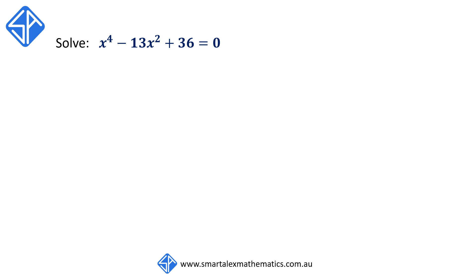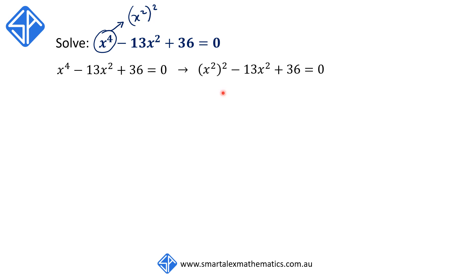This is an equation of degree 4. In order to reduce it to a quadratic equation, we recognize that x to the 4 can be rewritten as (x squared) squared using the index law. Using this trick, we can rewrite the equation as (x squared) squared minus 13x squared plus 36 equals 0. Our next step is to introduce the variable u. We let u equal x squared and replace all x squared terms with u, giving us the quadratic equation u squared minus 13u plus 36 equals 0.